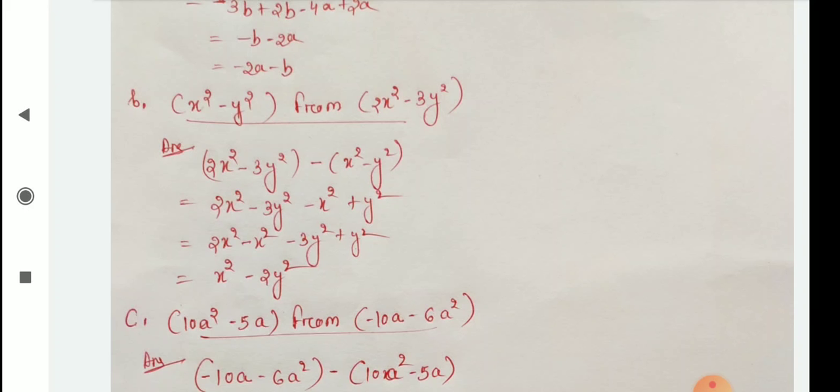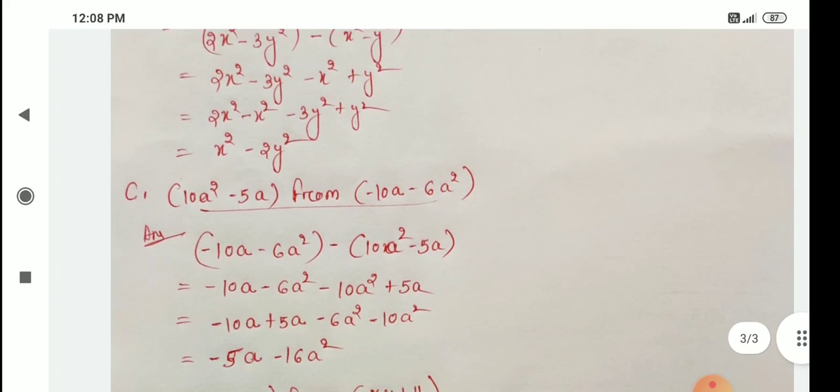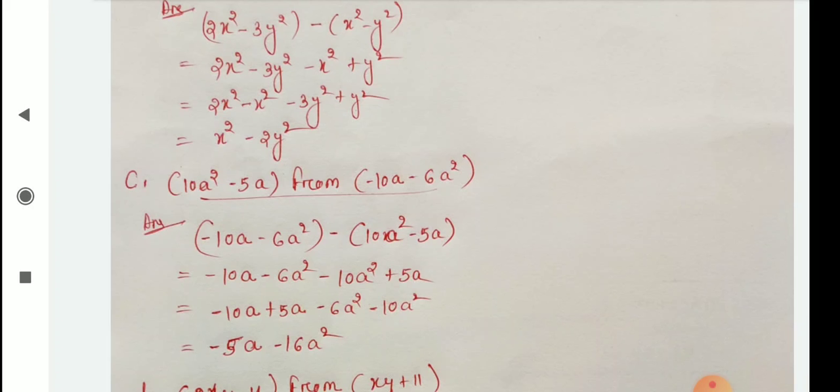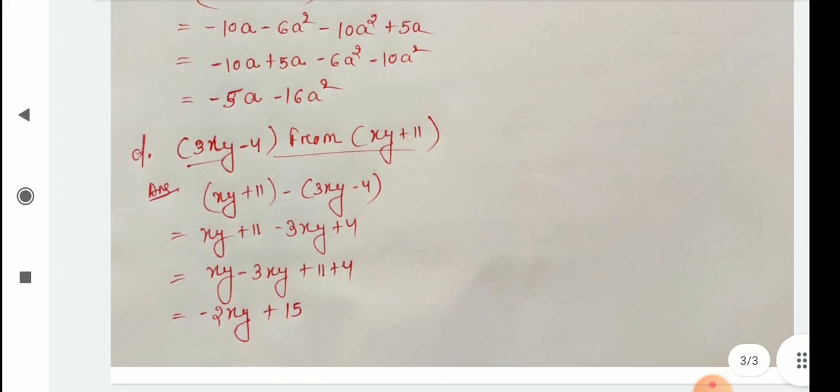So first of all, we write 2x square minus y square. And the additive inverse of x square is minus x square and minus y square additive inverse is plus y square. Like this we do. Then c, 10a square minus 5a from minus a minus 6a square. We write and do their additive inverse. Then we solve the answer.